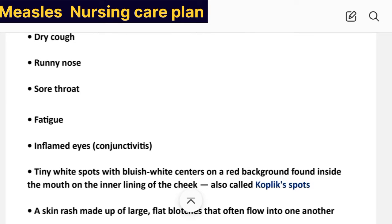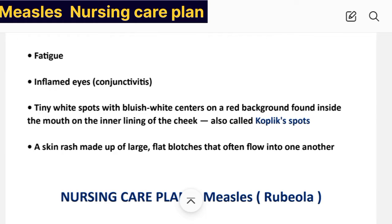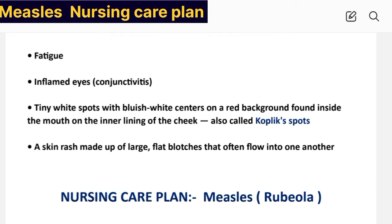Additional signs and symptoms include runny nose, sore throat, fatigue, and inflamed eyes or conjunctivitis. Tiny white spots with bluish-white centers on a red background found inside the mouth on the inner lining of the cheek — also called Koplik spots — are characteristic. A skin rash made up of large flat blots that flow into one another also develops.